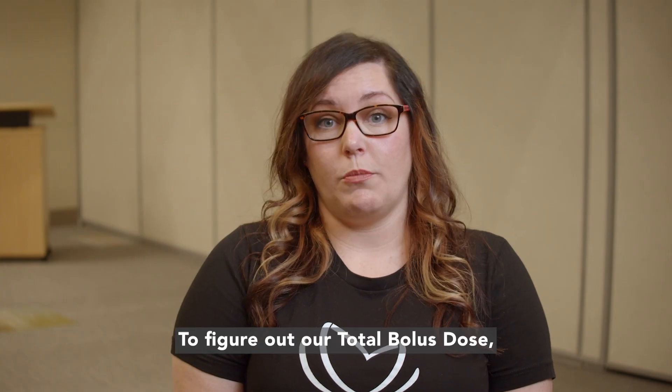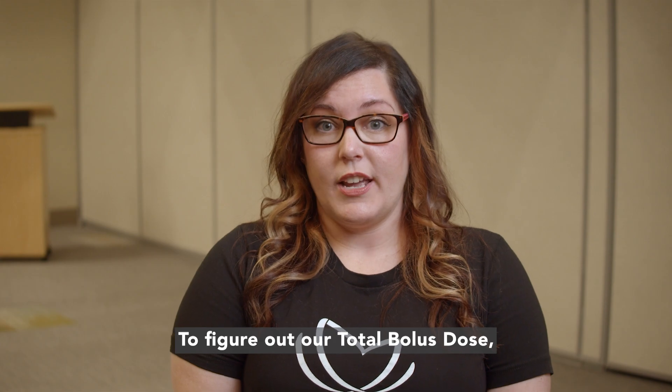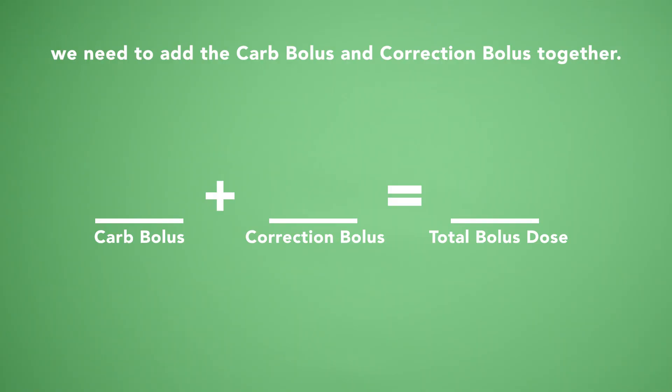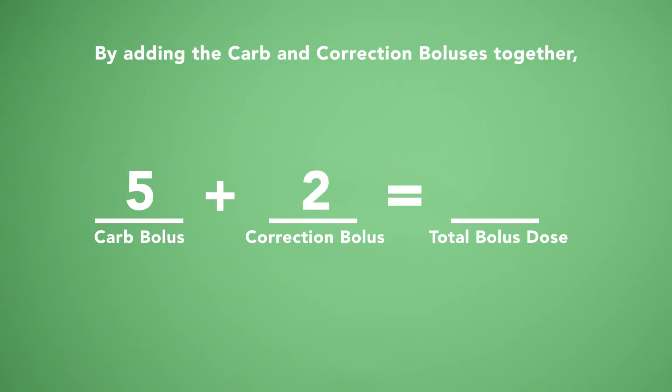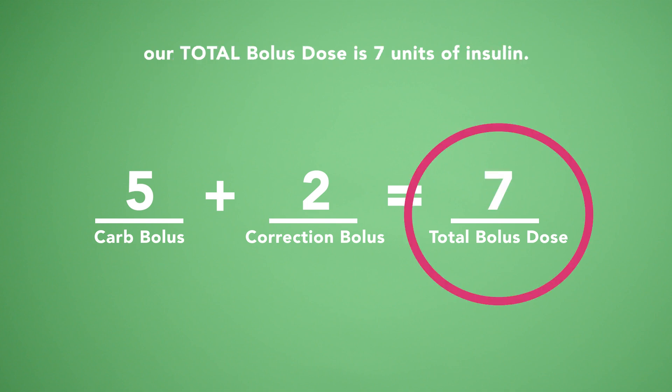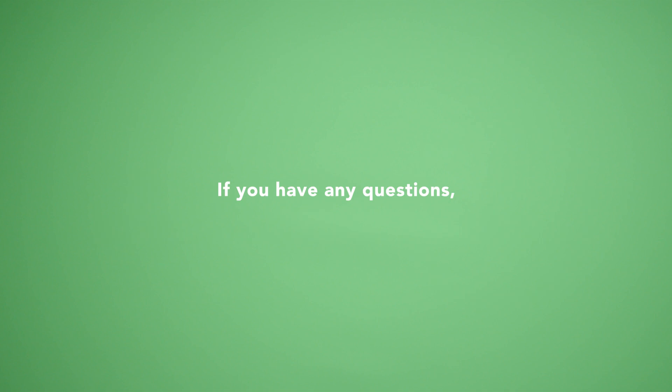To figure out our total bolus dose, we need to add the carb bolus and the correction bolus together. By adding the carb and correction boluses together, our total bolus dose is 7 units of insulin. If you have any questions, contact your child's provider.